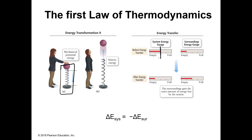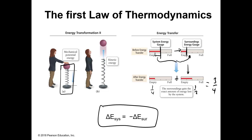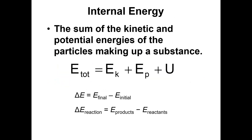The system — the spring — transferred a quarter of its energy to the surroundings. So the surroundings picked this up. If the surroundings had energy that was a quarter full, that energy is then transferred in. The total energy — a quarter plus one half — is always three quarters. Delta E of the system equals negative delta E of the surroundings. The system went down by one half, and delta E of the surroundings is plus one half. Overall, energy cannot be created or destroyed — that's a law.